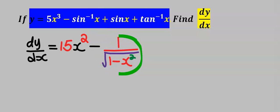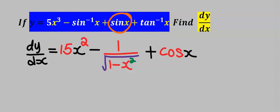Next, let's differentiate sine x. From the basic derivative table, when you differentiate sine x you get cos x. Hence, the derivative of sine x is cos x.